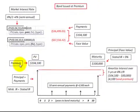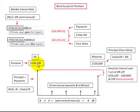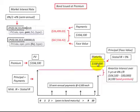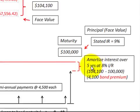We consider this a premium because $104,100 is greater than the maturity or face value. The logic is that the market interest rate of 8% is less than the stated interest rate of 9%, so the present value exceeds the face amount. The future value would be $100,000 at maturity. The premium amount is $104,100 minus $100,000, giving a $4,100 bond premium that has to be amortized over the life of the bond.